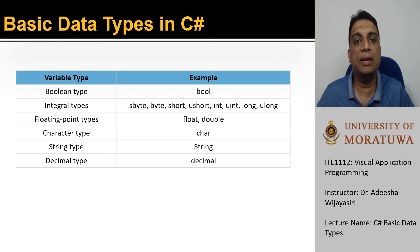We can divide C sharp basic data types into few categories: Boolean type, integral types, floating point types, character type, string type and decimal type. As you can see here, there are more than one data types available for some categories.